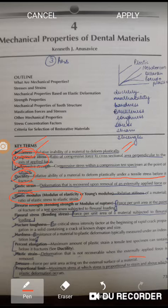Fracture toughness - a few MCQs in the past have come from this terminology only. Its definition goes like this: the critical stress intensity factor at the beginning of rapid crack propagation in the solid.